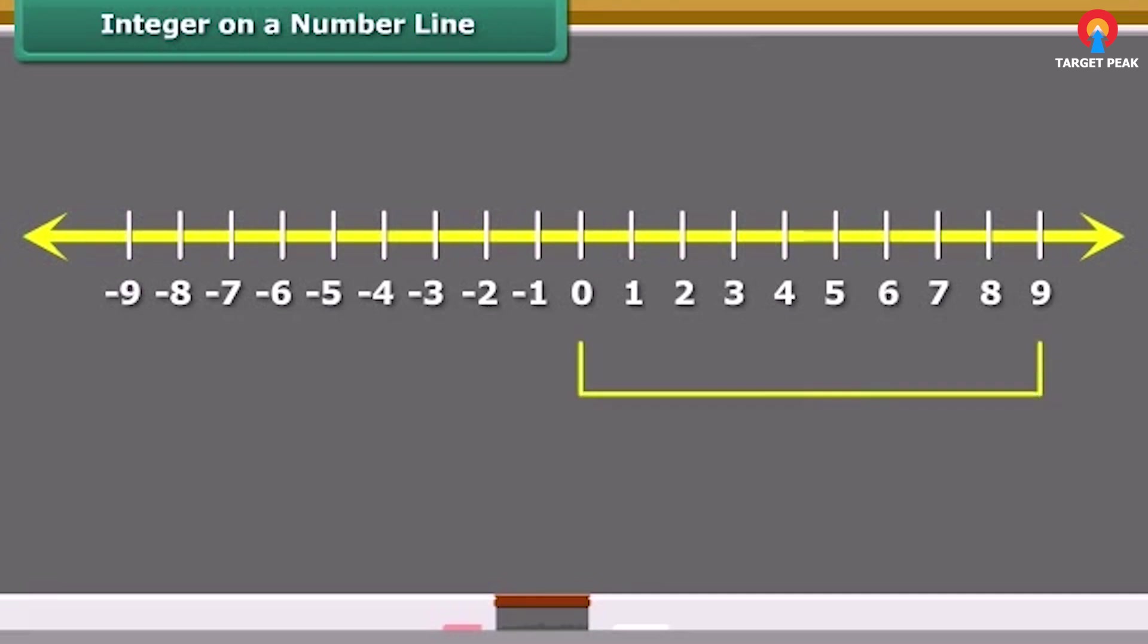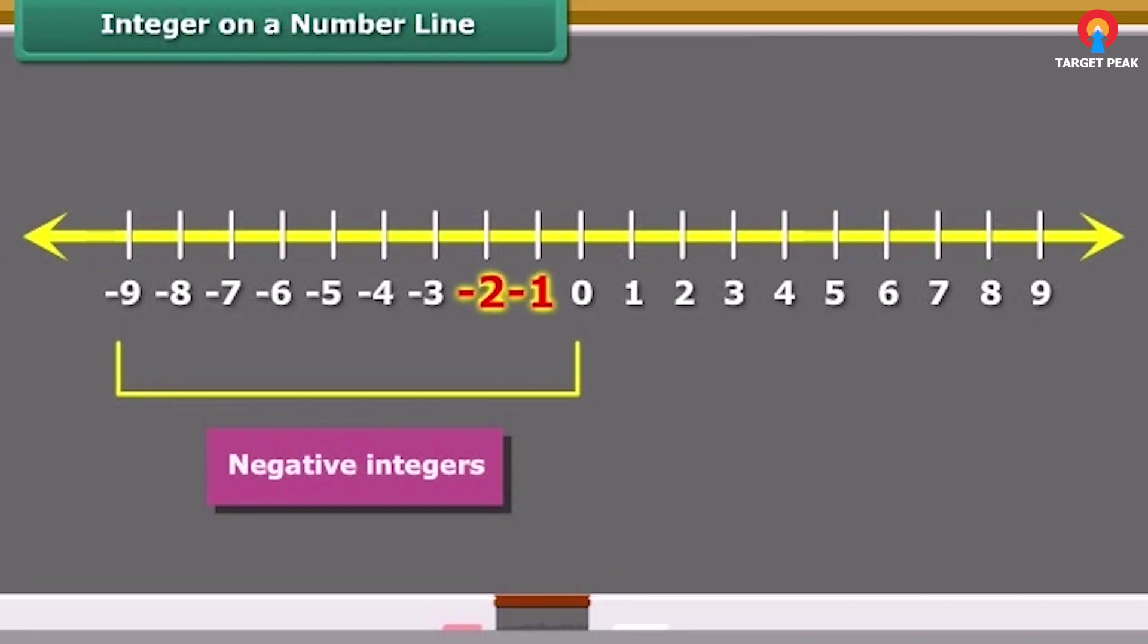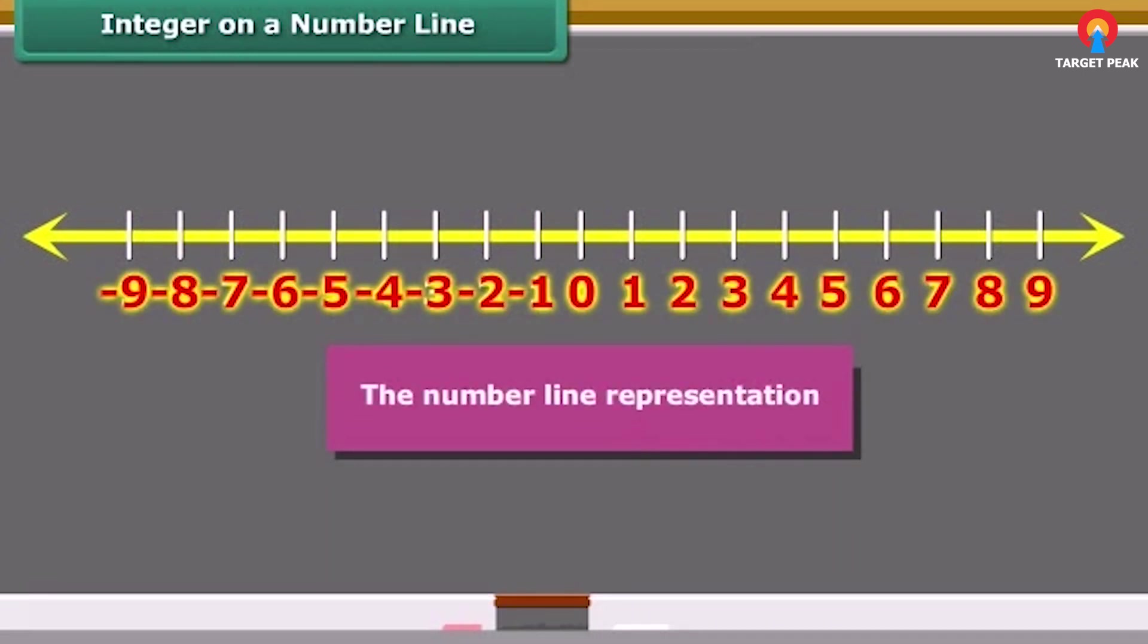Points to the right of zero are positive integers. Points to the left of zero are negative integers and are marked minus one, minus two, minus three and so on. This type of representation of integers is called the number line representation.